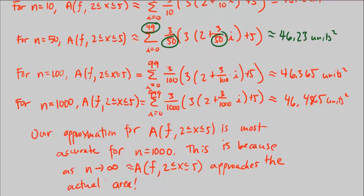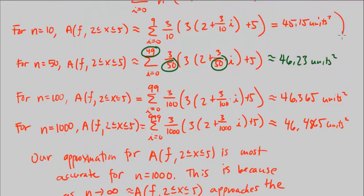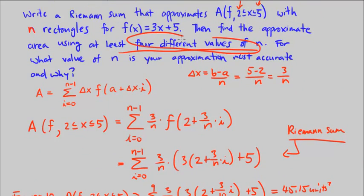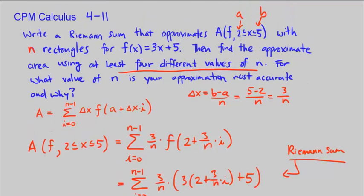This is one set of solutions. We can have a million different possible n's because they just say give at least four different values for n. You could choose any four you would like. That's going to end CPM Calculus Chapter 4, Number 11.